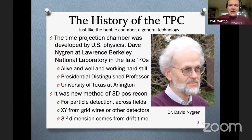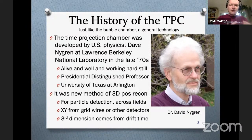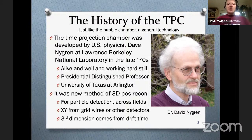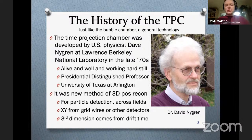Nygren's TPC idea was a new method in the 1970s for three-dimensional position reconstruction across different fields of physics for detection of particles. You get the radial position — XY — from grid wires in a TPC, and the third dimension comes from the drift time between an initial signal and a later signal. The big innovation of the TPC was getting the third dimension by electrons that drift across a space in the TPC, with time converted using electron drift velocity into a distance.